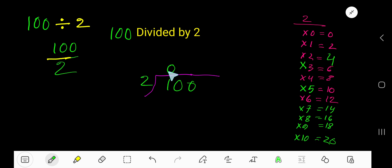So 0 times. 0 times 2 is 0. If you subtract, you are getting 1. Bring down the first 0.